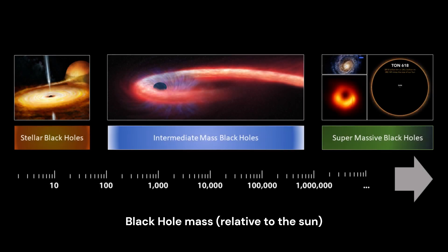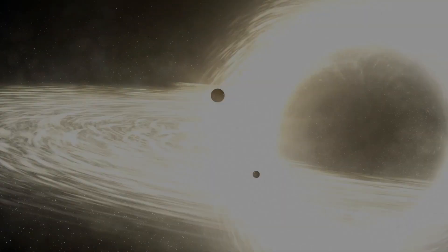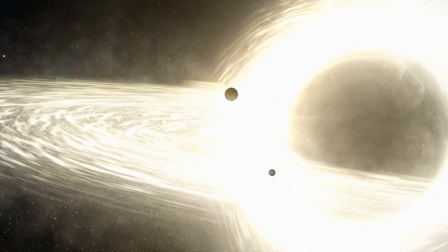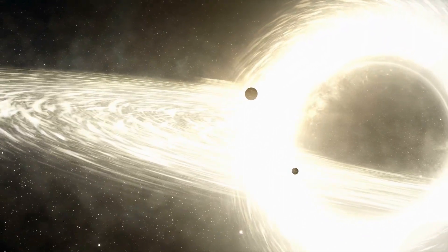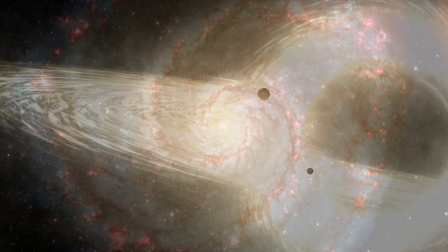Supermassive black holes are the largest of the three types, with masses ranging from millions to billions of times that of our Sun. The formation of supermassive black holes is a complex and active area of research. They are commonly found at the centers of most galaxies and may have formed through the accretion of matter over cosmic time, mergers of smaller black holes or other processes.